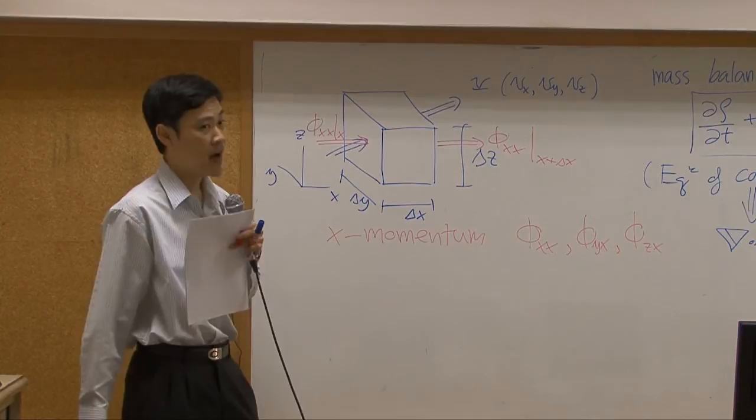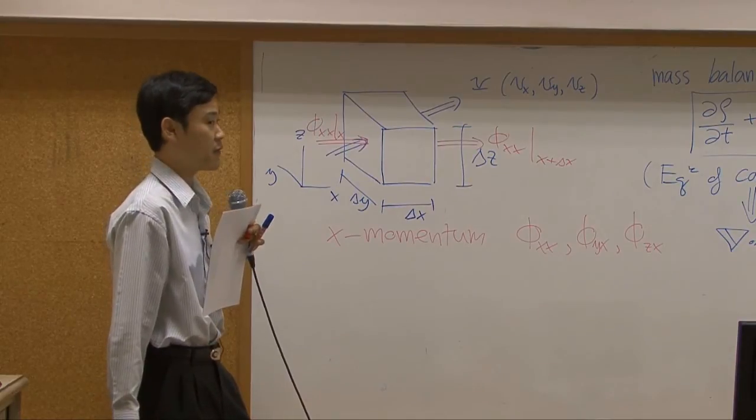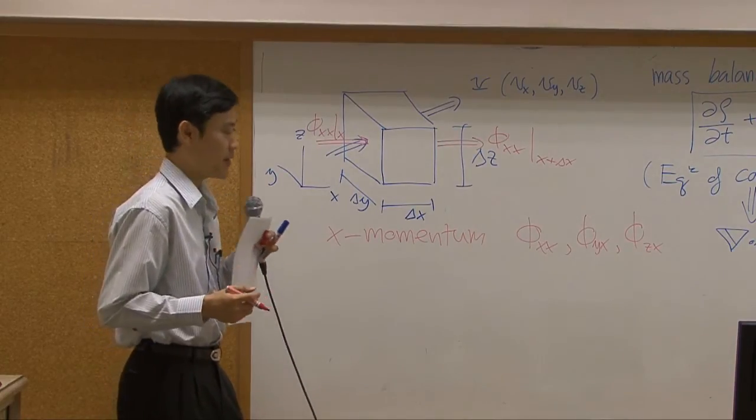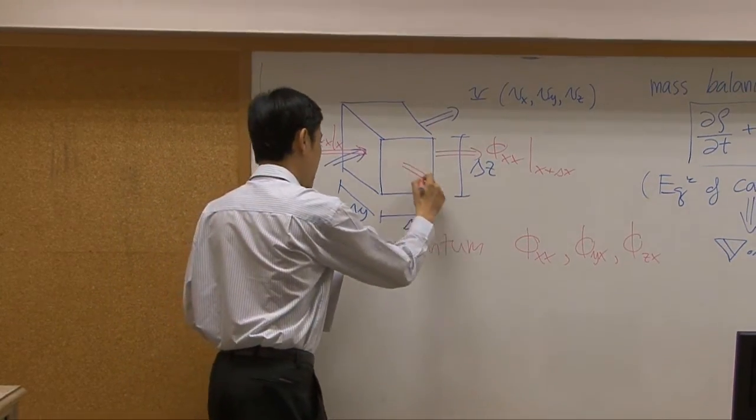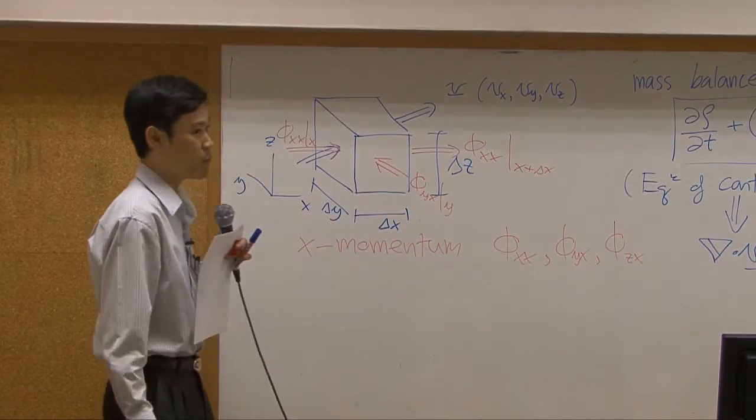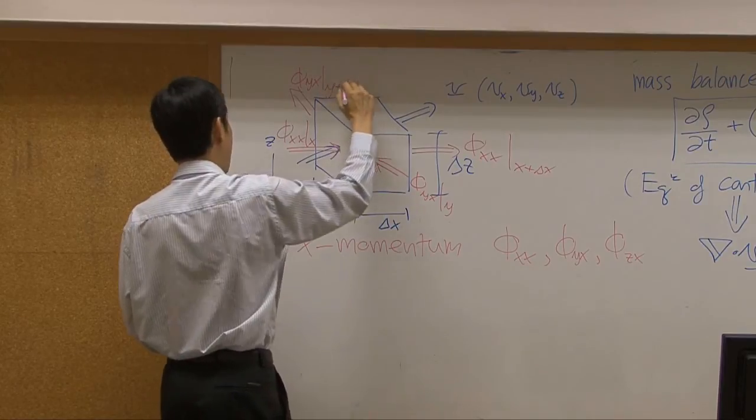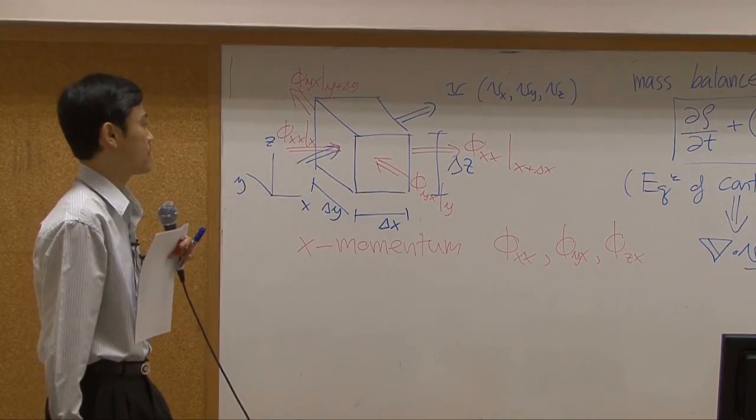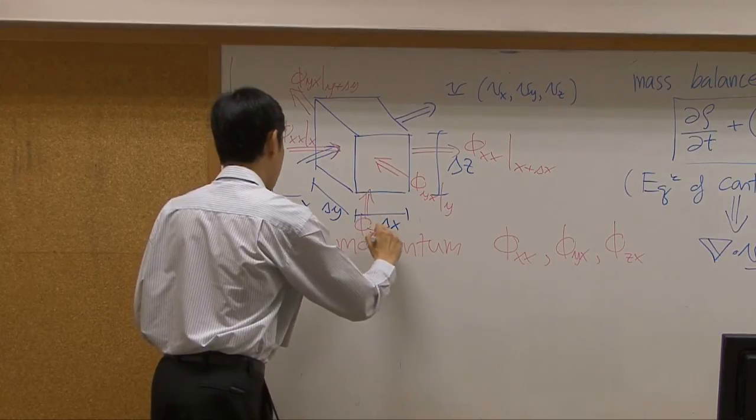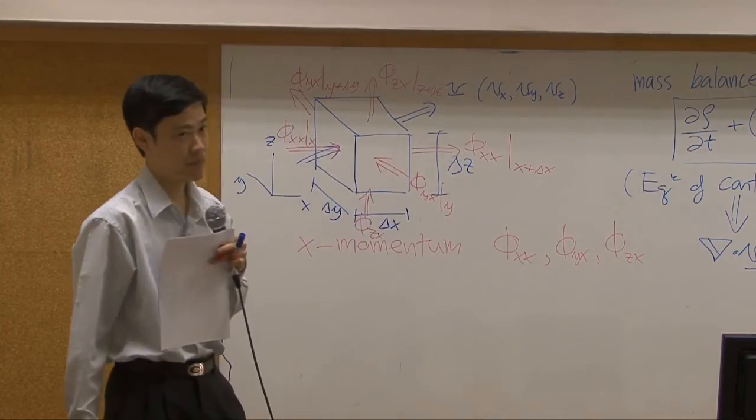It's going out here. It's coming in at x. It's coming out at x plus delta x. What about phi yx? It's transfer along y axis. So it's supposed to go in here. This is phi yx. In takes place at coordinate y. It's going out here at phi yx at y plus delta y. And for phi zx, it's going along z direction. This is phi zx. And this is phi zx going out at z plus delta z.